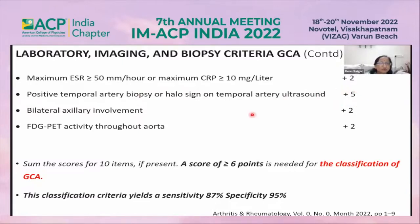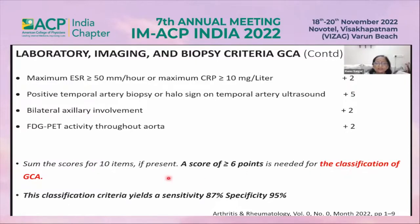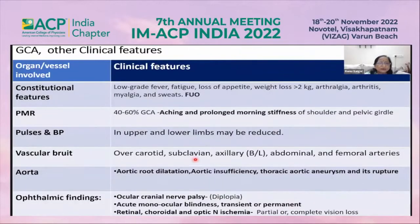Additional criteria include bilateral axillary artery involvement and FDG-PET activity throughout the aorta. If the summed score of these ten items is six or more, we can classify the patient as having GCA — giant cell arteritis. The specificity of this criteria is 95%.